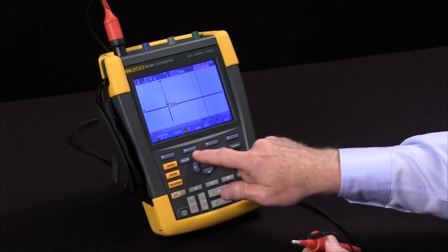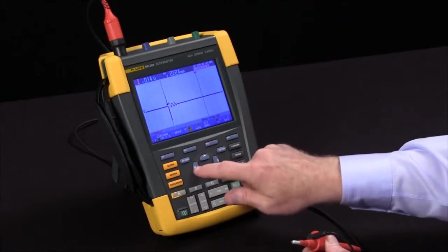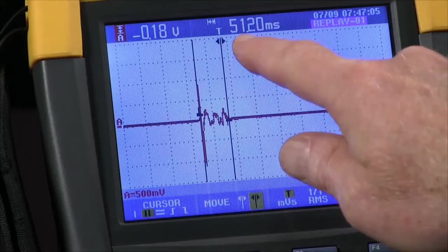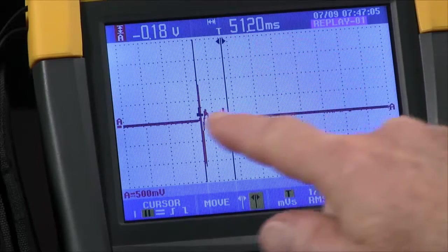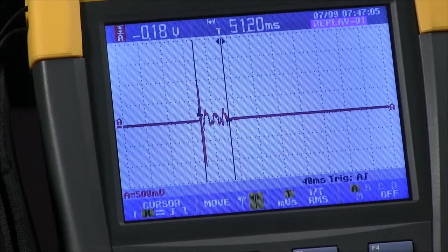I'll switch to the second cursor by pressing the F2 key. Now I've got control of this one. I'll bring it to the end of the event and I can see the delta time 51 milliseconds between those two points and the difference in voltage as well.